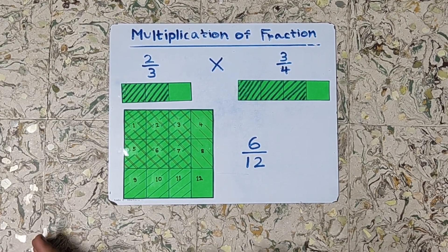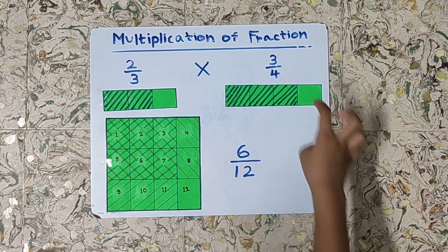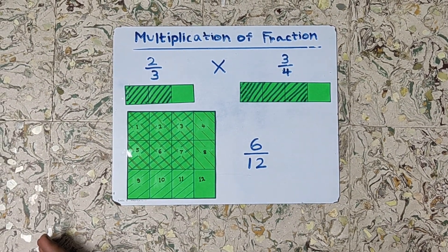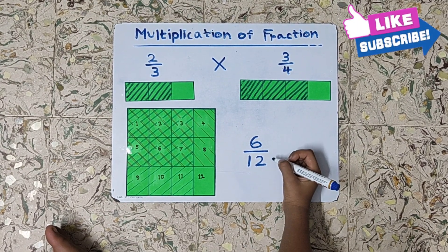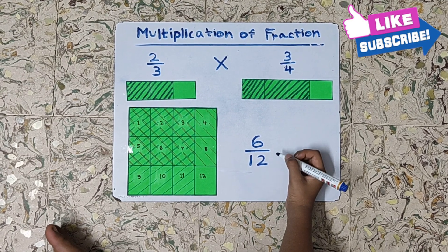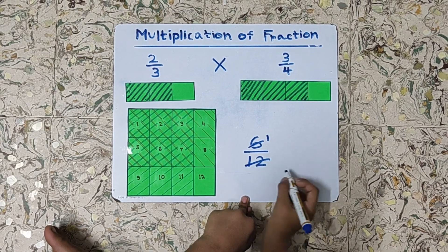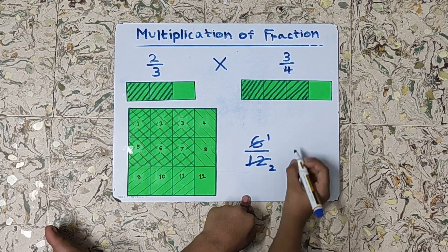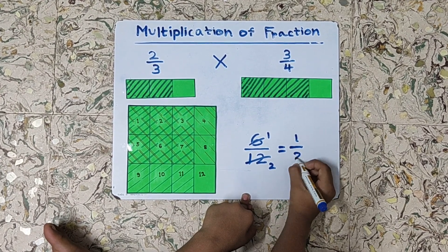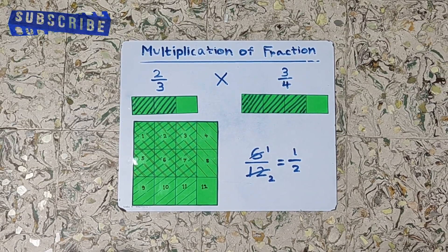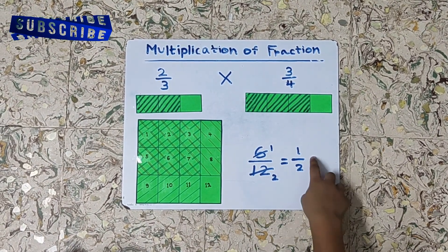So 6 by 12 is the answer of 2/3 × 3/4. But see, friends, 6/12 can be reduced. Dividing both by 6: 6 divided by 6 is 1, and 12 divided by 6 is 2. So it is 1/2. The final answer of 2/3 × 3/4 is 1/2.